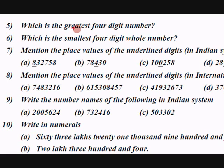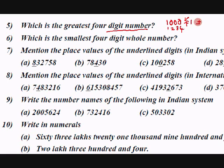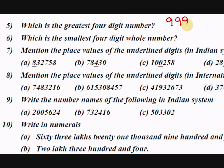Next question: which is the greatest four-digit number? Greatest means the successor will be a five-digit number. If you add 1 to it, it becomes 100,000 — a five-digit number. Therefore, 9999 is the greatest four-digit number.